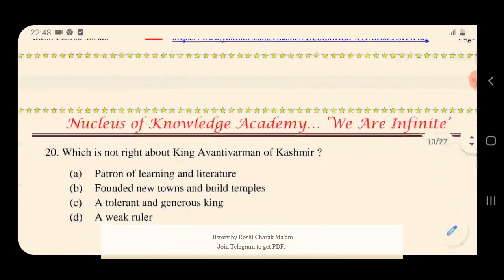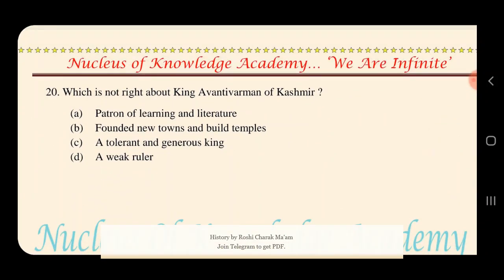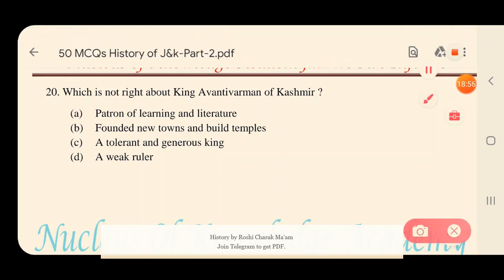Question 20: Which of the following is NOT right about King Avantivarman of Kashmir? Options: A) Patron of learning and literature; B) Founded new towns and built temples; C) A tolerant and generous king; D) A weak ruler. The right answer is option D — a weak ruler. Avantivarman was never a weak ruler; he was a renowned king with a strong and very peaceful rule.